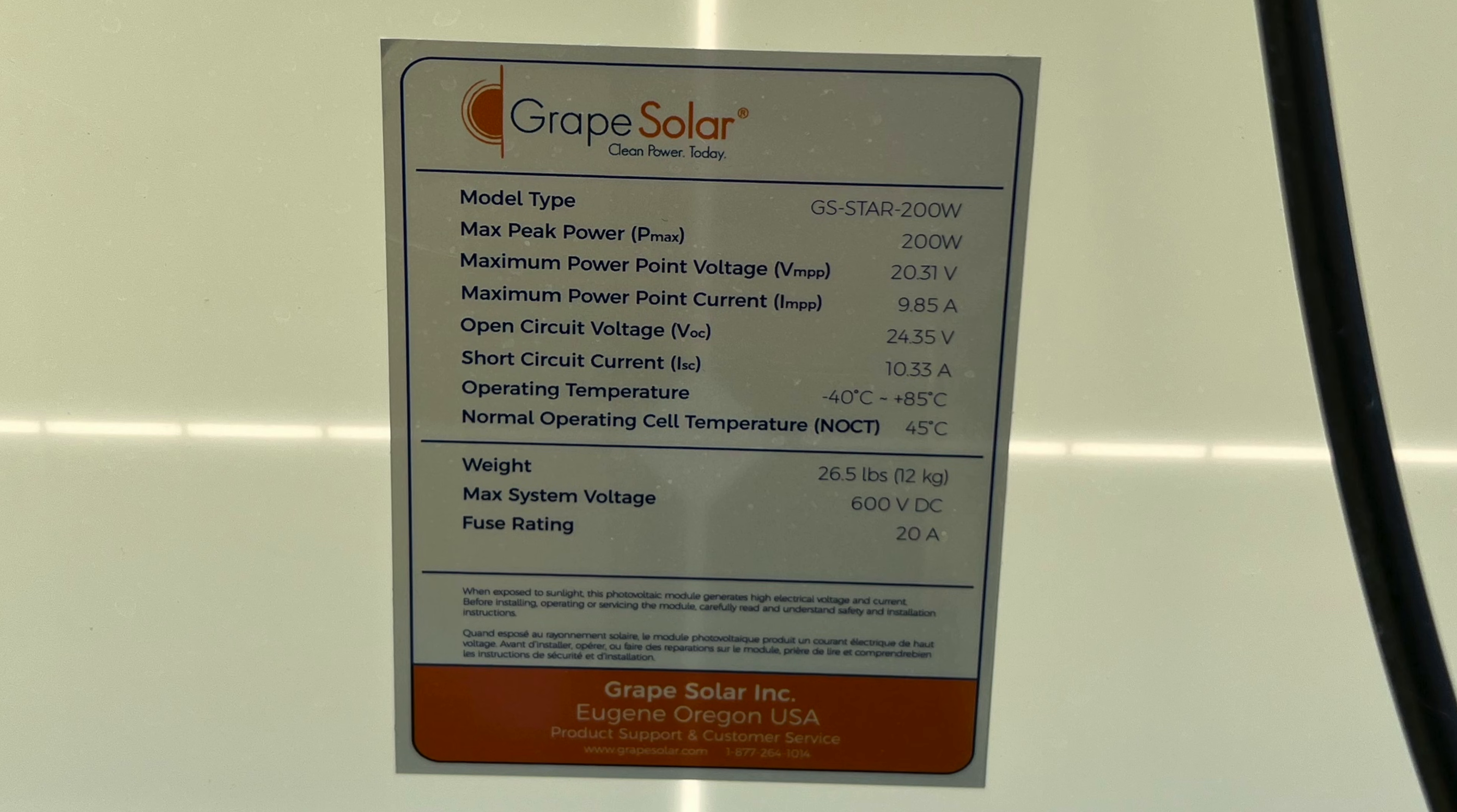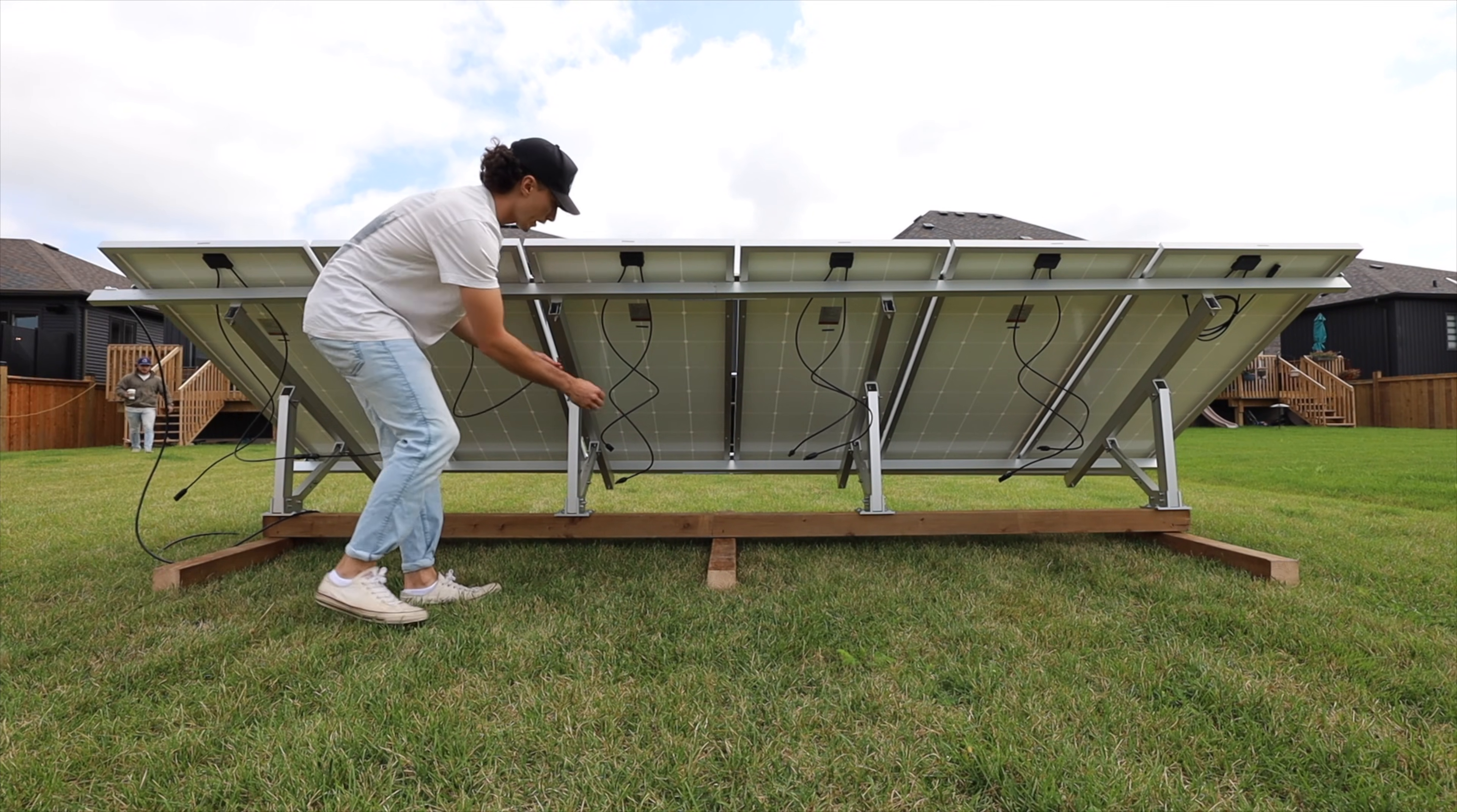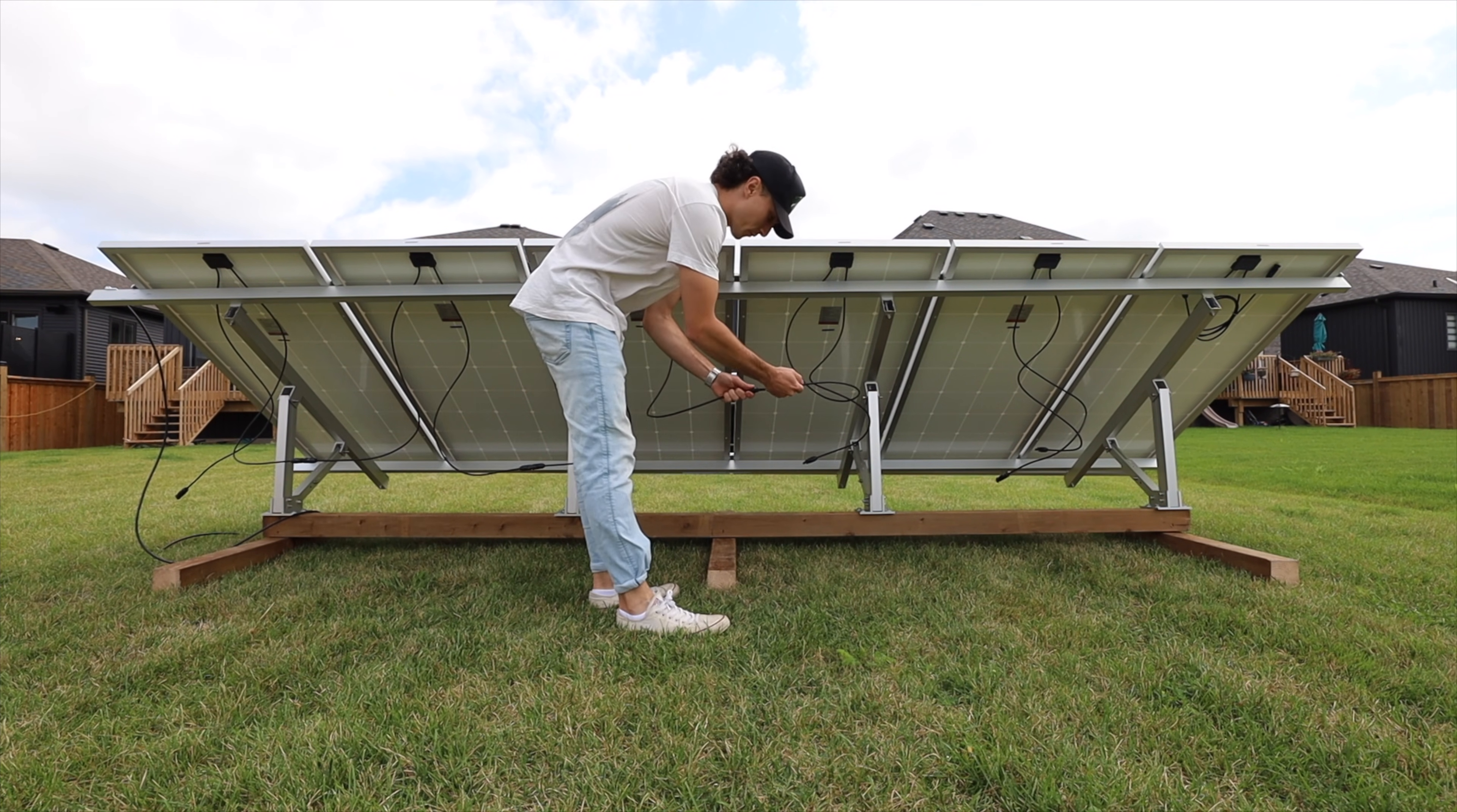Wiring your panels in series is when you basically daisy chain them together. You take the positive from one panel, the negative from another one, you connect them to each other and you create a big daisy chain string of panels.